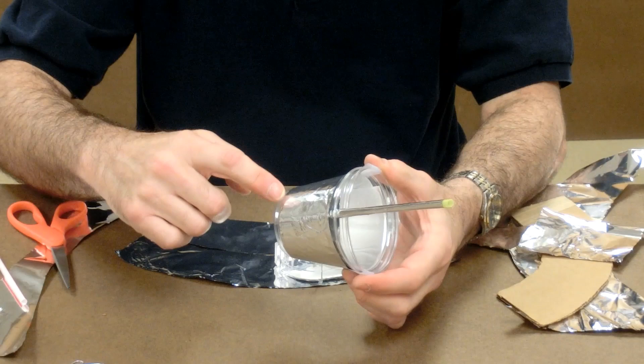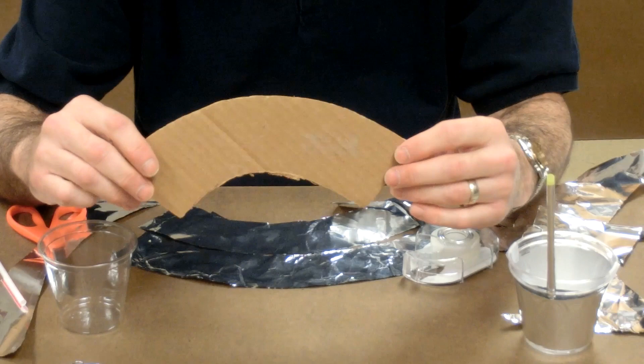So it sometimes helps to have a cardboard template for you to put on your aluminum foil to trace out and cut.